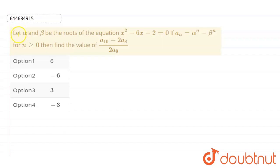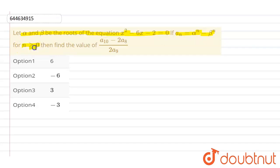Let alpha and beta be the roots of the equation x squared minus 6x minus 2 equals 0. If aₙ equals alpha to the power n minus beta to the power n, and n is greater than or equal to 0, then find the value of (a10 minus 2·a8) divided by 2·a9.